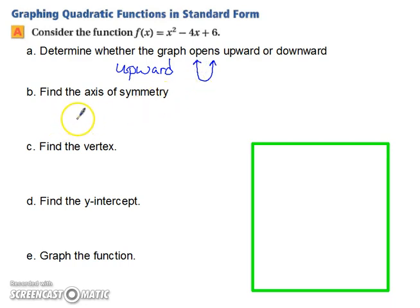Now we need to find the axis of symmetry. And that formula, it's going to come up quite often, is the opposite of b, divided by 2a. Which translates to 4 divided by 2 times 1, because you can always have a coefficient of 1. And 4 divided by 2 times 1 is 2. So your axis of symmetry is 2.